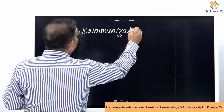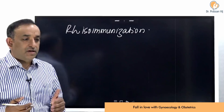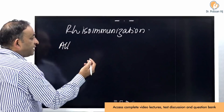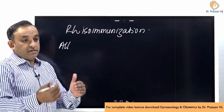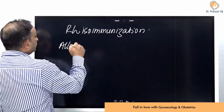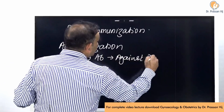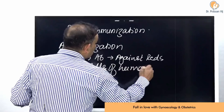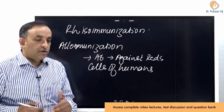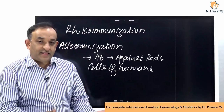RH isoimmunization, which is more correctly called RH alloimmunization. What is alloimmunization? If you have made an antibody which is going to act against human cells but not in the same body — for RH antibodies, alloimmunization means these antibodies will act against the red cells of humans, but not in the human in which these antibodies are made. So, if the mother makes the antibodies, it is going to act against the red cells of the fetus.